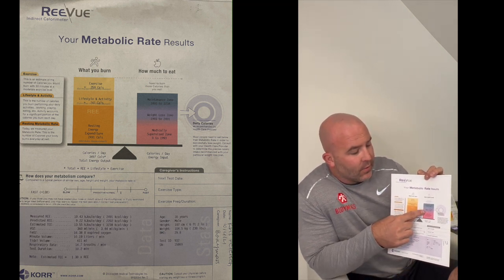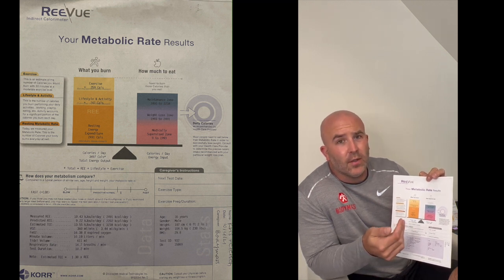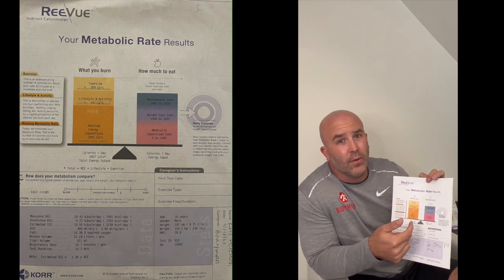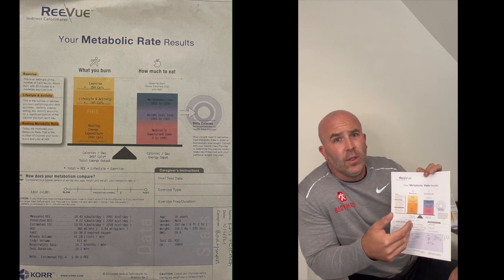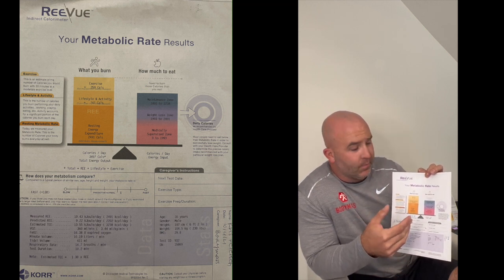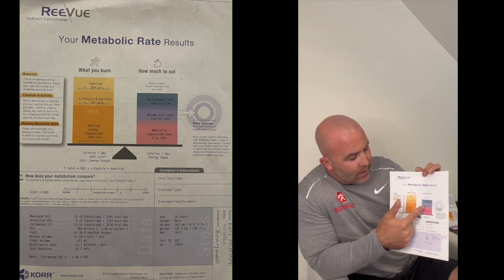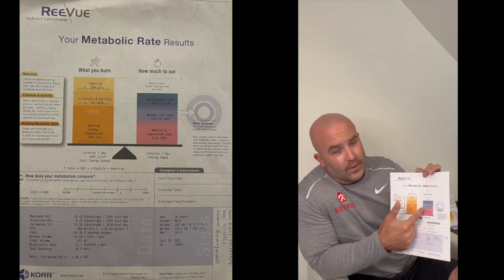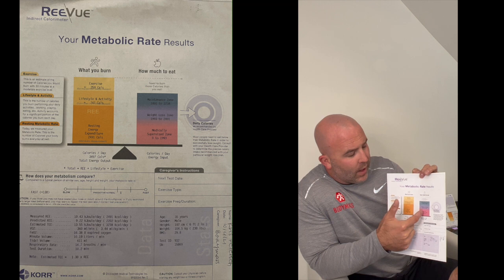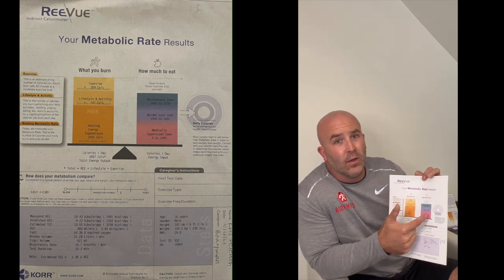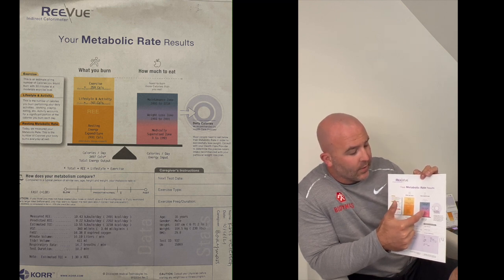The next zone right above that is our weight loss zone. It puts us in a caloric deficit compared to our resting metabolic rate, so even if we're not exercising we should be able to lose fat. That zone starts with the resting metabolic rate as the top of the zone and puts us in a caloric deficit below it. If you're not training much, eat on the lower end; if you're getting a lot of exercise, eat on the higher end. If I eat at the higher end — around 2,500 calories — and then start to exercise and move more, it drives me into a deficit, which should create fat loss.